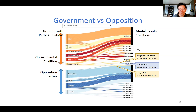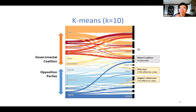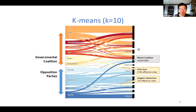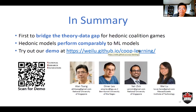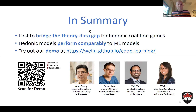We also compared this to machine learning algorithms like k-means, which is pretty good at separating the government from the opposition, but produces mixed coalitions that we think are implausible. We believe our algorithm has significant advantages over machine learning approaches. This paper is the first to bridge the data-theory gap for hedonic coalition games, and you can try our demo — all results are available on our website.